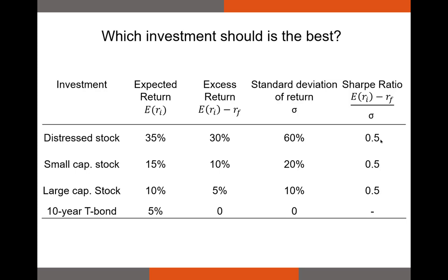The answer to what stock or bond you would prefer is really dependent on you — there is no right answer here. What your choice reveals about you is your level of risk aversion. If you are a very risk averse investor, chances are you'd say you want to invest in the large cap stock — it has low return but also very low risk. If you're not risk averse, you might be more inclined to invest in the distress stock. These assets have the same risk adjusted return, so your choice is dependent on your level of risk aversion.